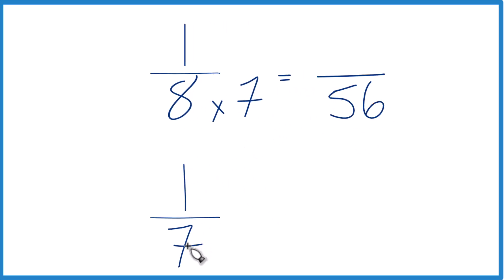And then down here, 7 times 8. Because 7 times 8, that is also 56. So now we have the same denominator.